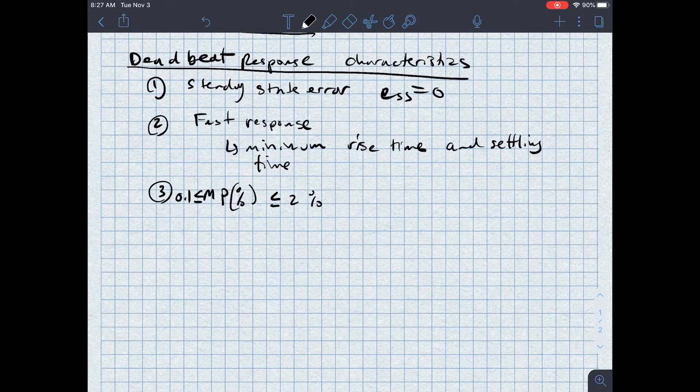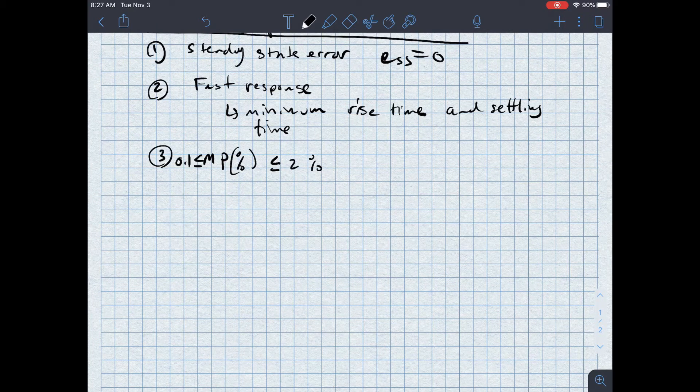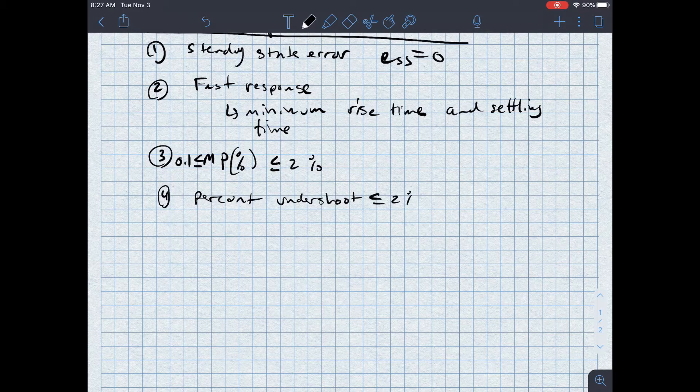In other words, there is no measurable overshoot outside of the settling time. And then lastly, the percent undershoot is also less than or equal to 2 percent to make sure that the signal gets within the 2 percent band and stays there.